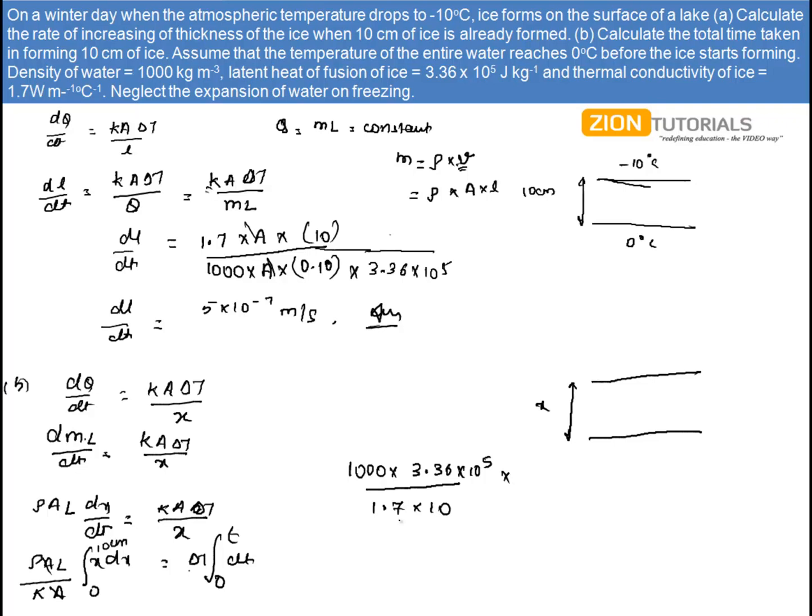On solving this integration, I get x squared by 2. Limit varies from 0 to 0.1, and on solving this, I get the value of this integration as t.